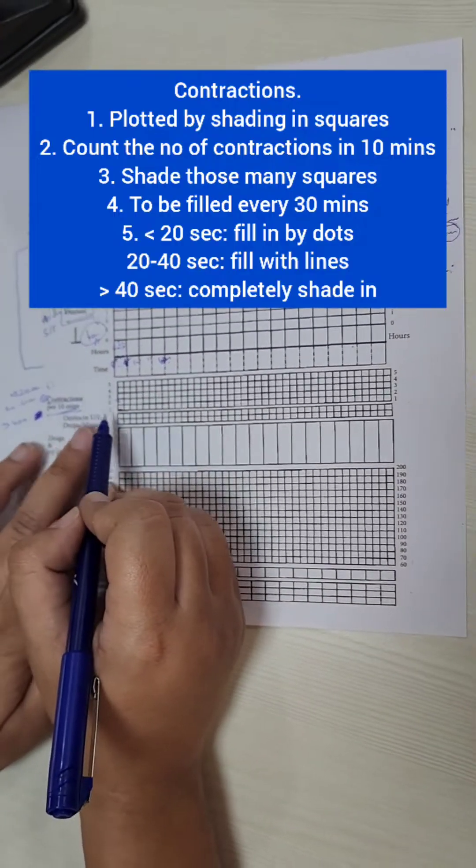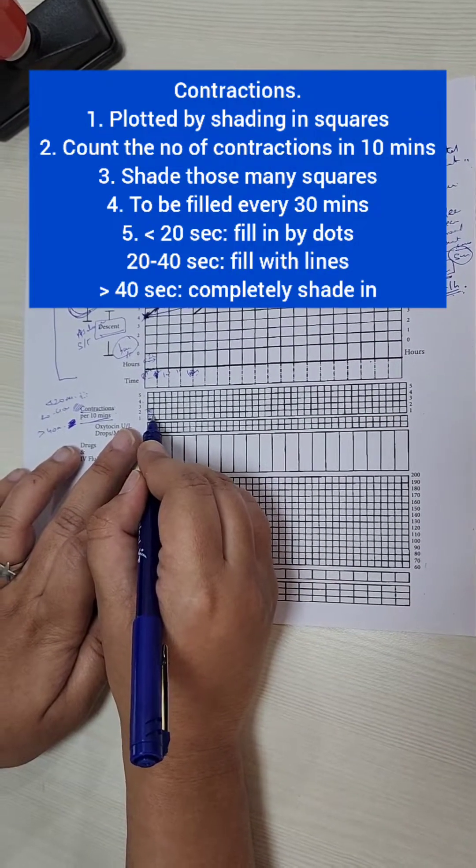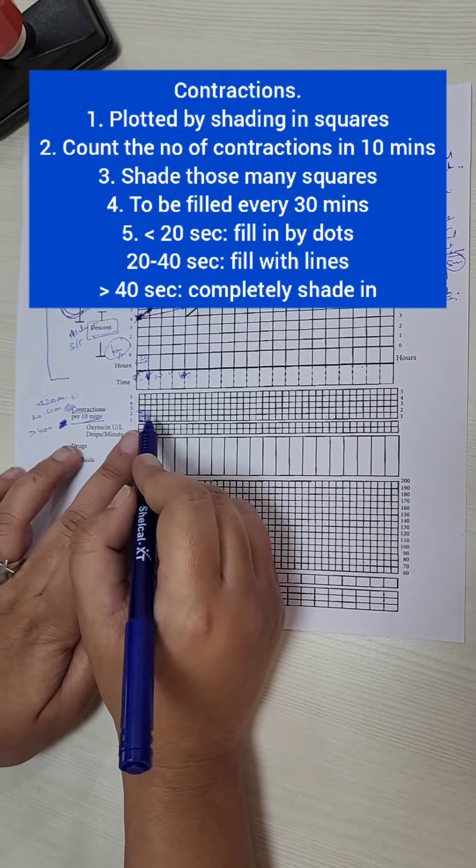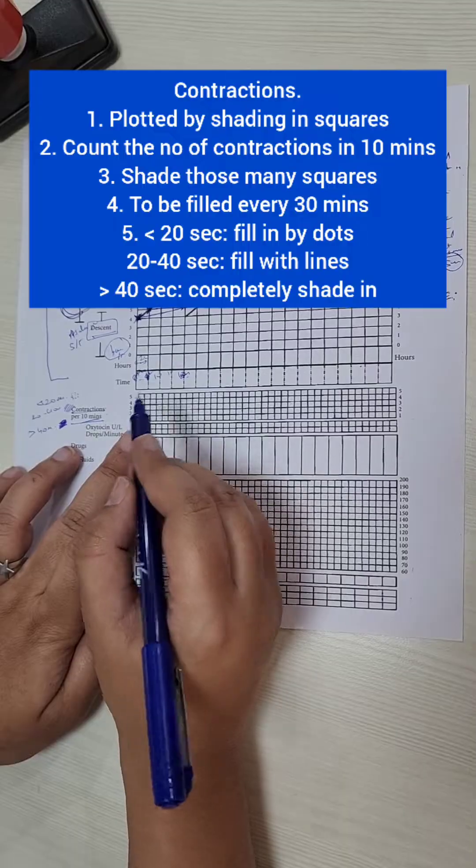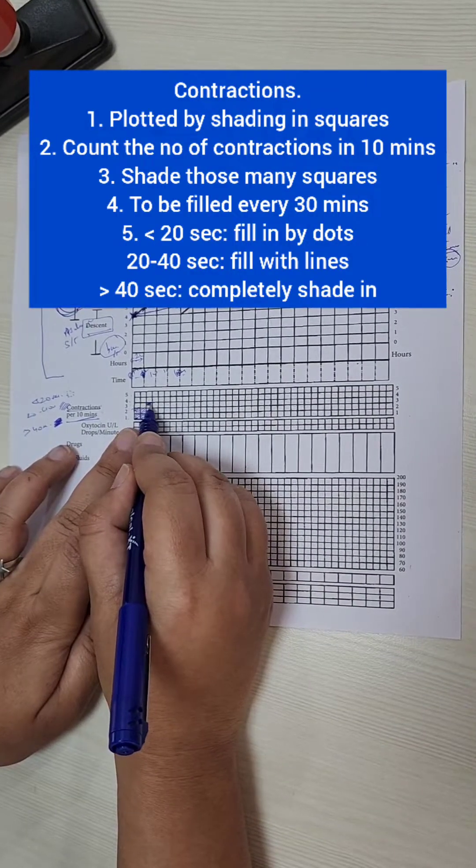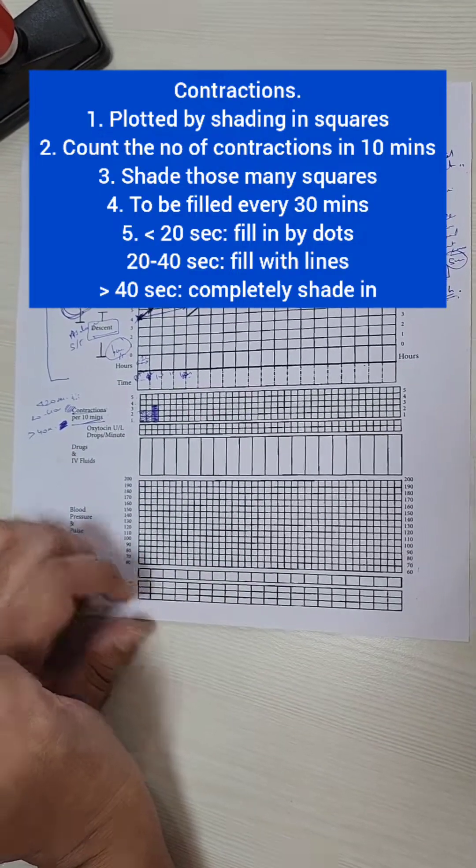So say she comes to us with 2 contractions lasting for 30 seconds. I will shade it in like this. See after half an hour, it's the same. Say after that, I do an ARM and the contractions improve. Say she is getting 3 contractions lasting for 40 seconds. So I will now shade it in like this. So this is how contractions are checked.